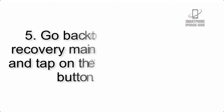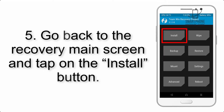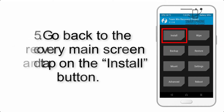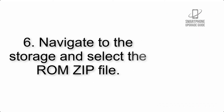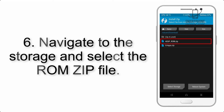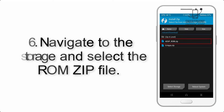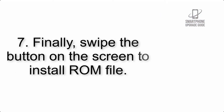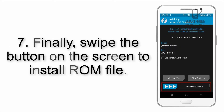Step 4: Swipe the button to wipe the device. Step 5: Go back to the recovery main screen and tap on the Install button. Step 6: Navigate to the storage and select the ROM zip file.